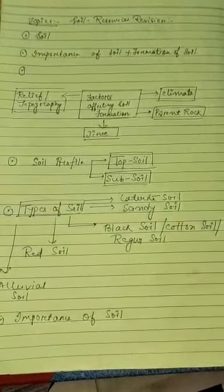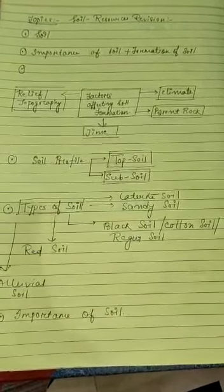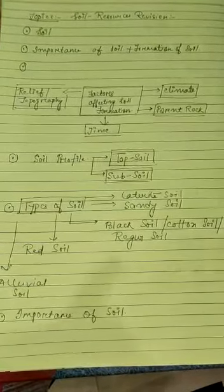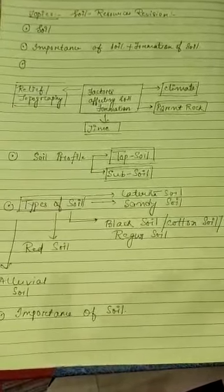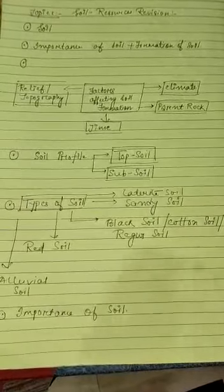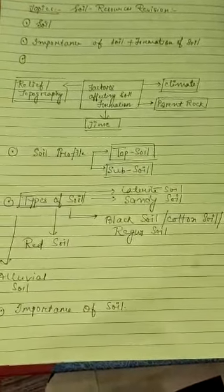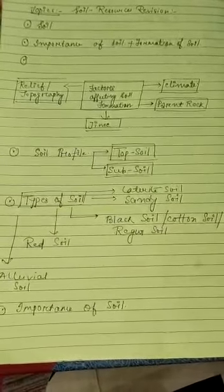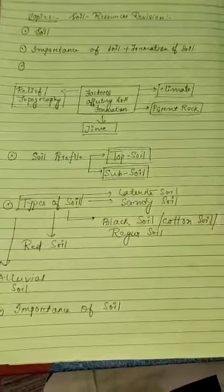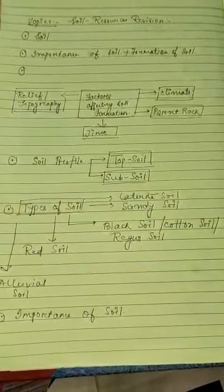Second is importance of soil and its formation. Third is soil profile, types of soil, and the importance of soil. These are the basic things in this chapter, and we have gone through the VTOs. I think the chapter is clear to everyone. So let's start the video.